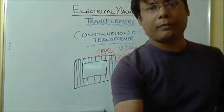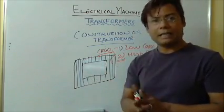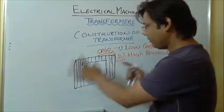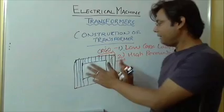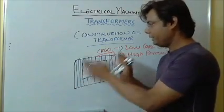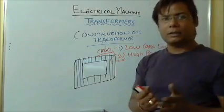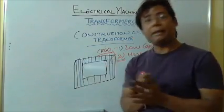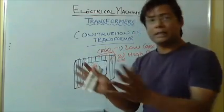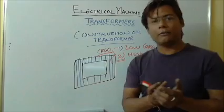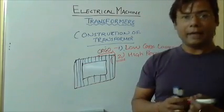My point was how a transformer is constructed. This transformer core is constructed with plain laminations. Laminations are separated by a thin layer of varnish to avoid eddy current losses.